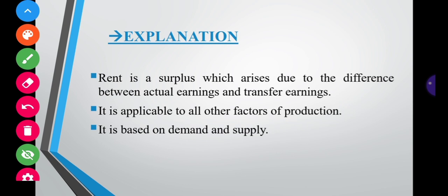In the explanation part, according to the Modern Theory, rent is a surplus which arises due to the difference between actual earnings and transfer earnings. Modern economists argued this concept of rent is applicable to all factors — land, labor, capital, or organization. The modern theory of rent is based on the demand and supply concept.